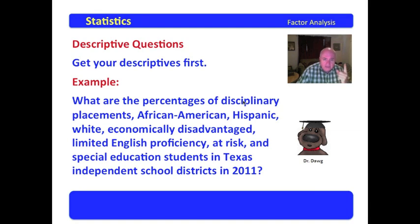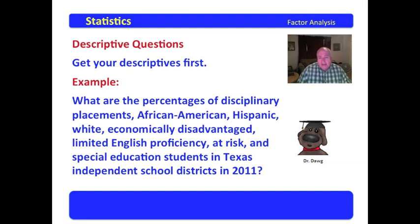How many variables do we have? Disciplinary placement, African American percentages, Hispanic, white, economically disadvantaged, limited English proficiency, at-risk, and special education. So we, in fact, have eight variables here. And we're asking: what are the percentages for these 1,200-plus school districts in Texas?